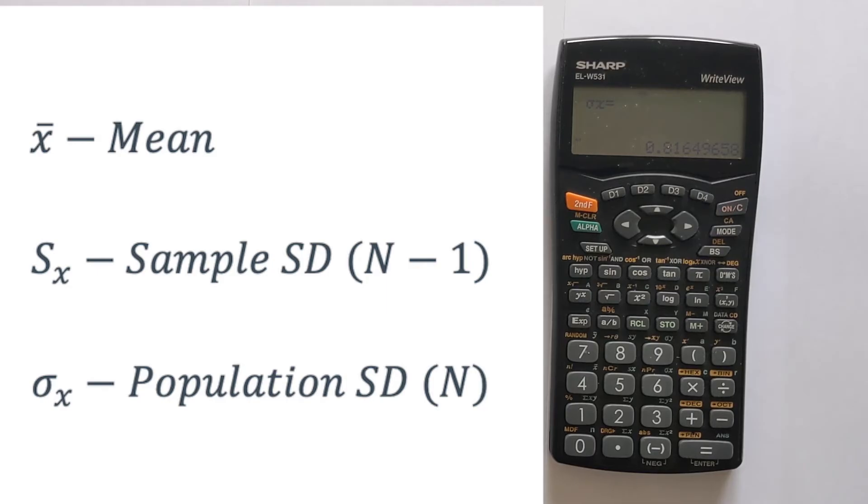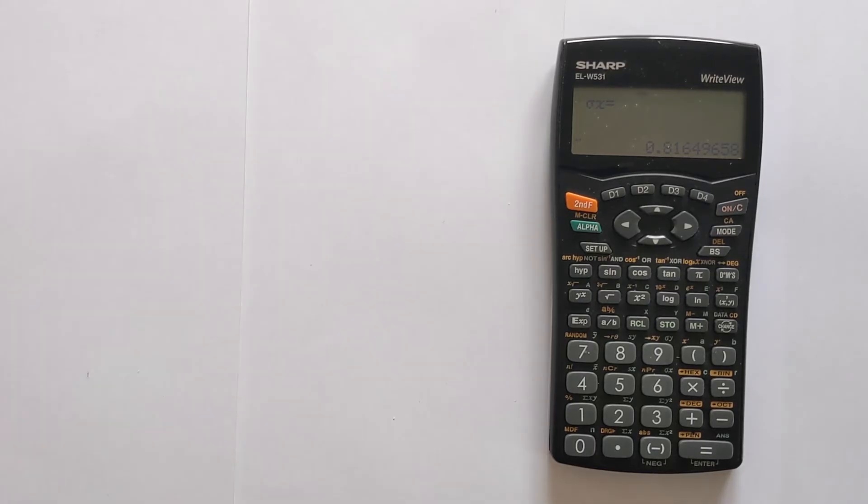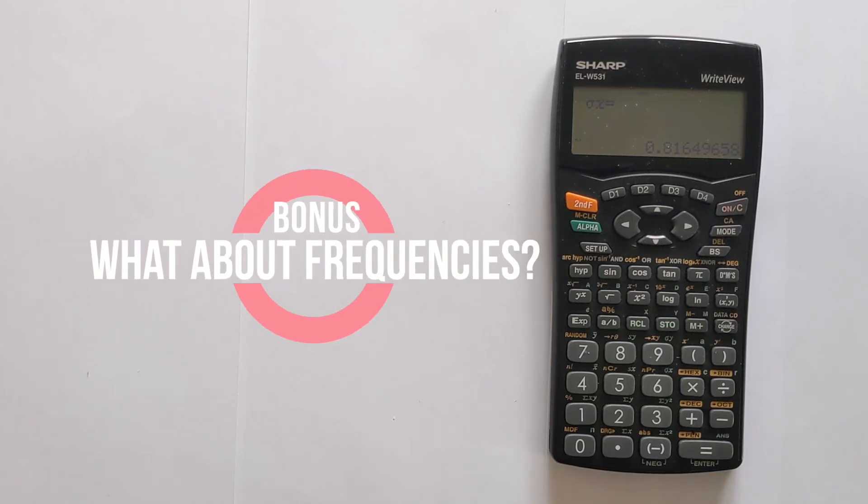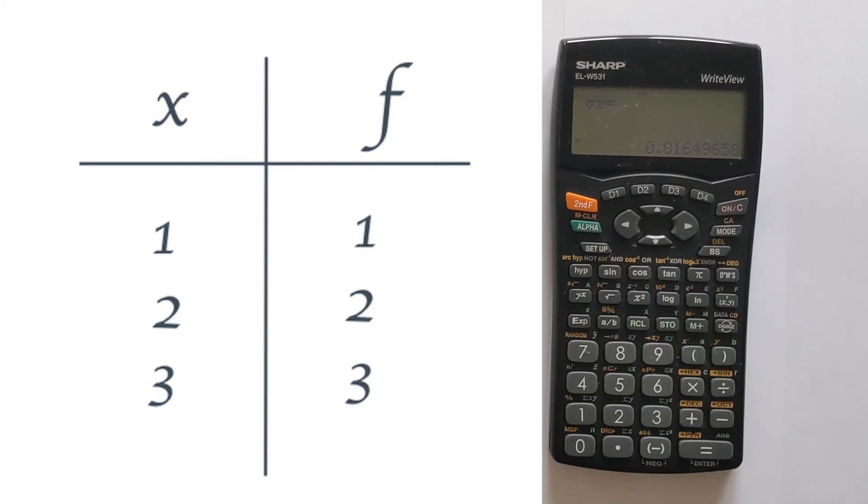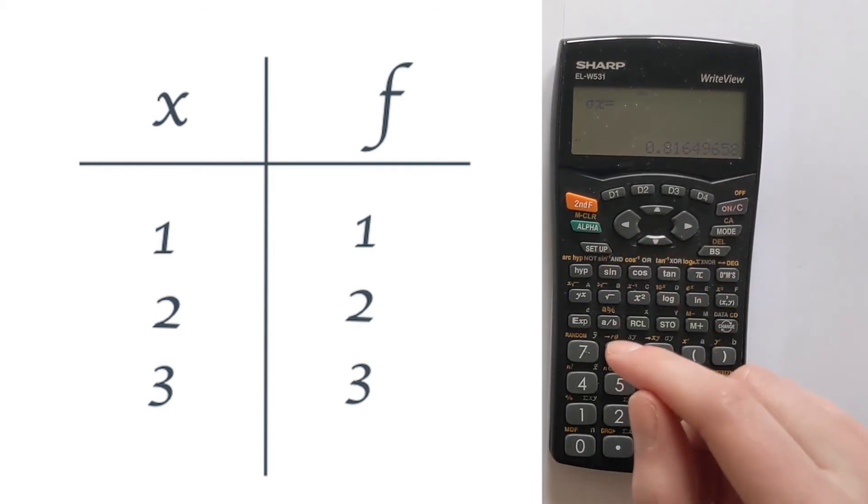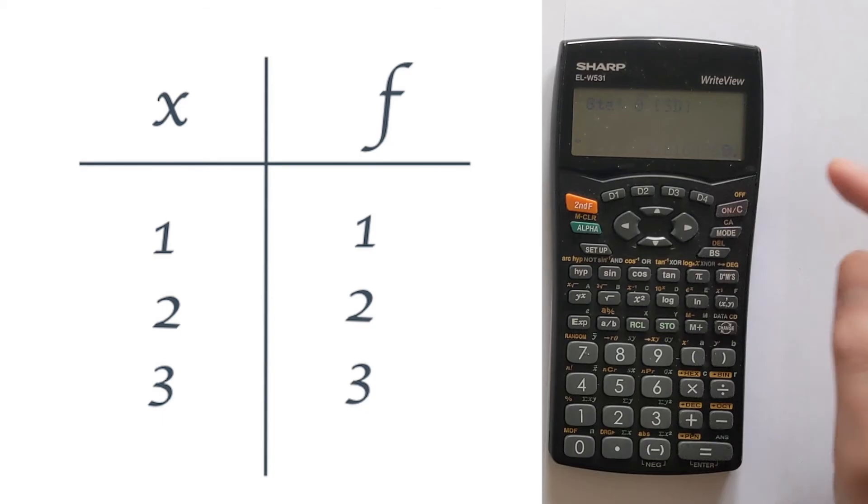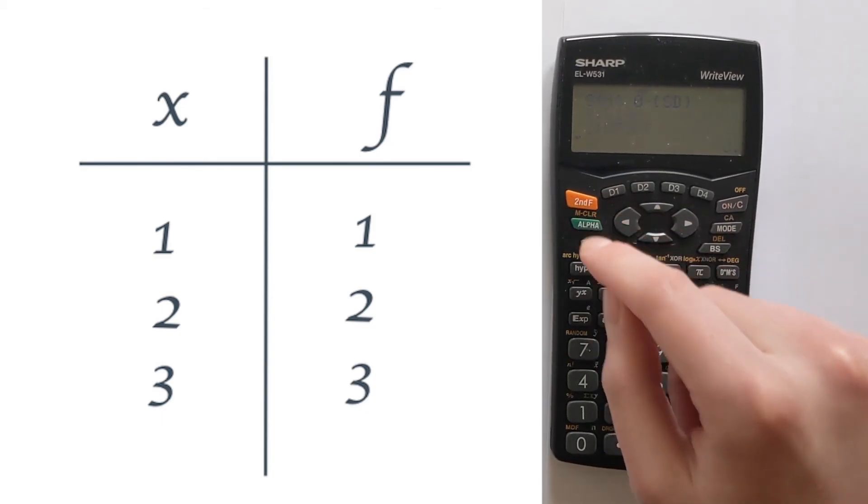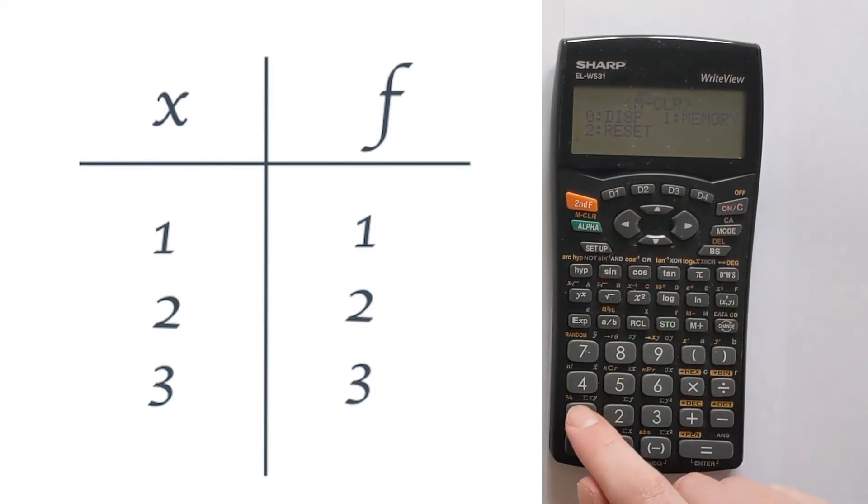If however you had a frequency table, there's a slightly different method. For example, if you had the numbers 1, 2, 3, but you had frequency data, so you had 1 one, 2 twos, and 3 threes, you're going to have to use a slightly different method. I'll show you how you can enter data with a frequency table. You're going to have to go back to the beginning and I'm going to reset the memories like we did previously. So that's cleared the memories. Now I'm going to show you how you can input data with a frequency column.